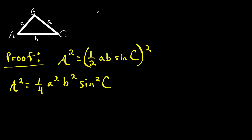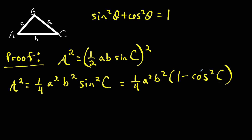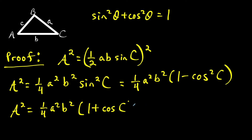From this step, I want to use the Pythagorean identity: sine squared theta plus cosine squared theta equals one. So if I want an expression just for sine squared, sine squared equals one minus cosine squared. That gives us one fourth times A squared times B squared times (one minus cosine squared C). And now we're going to factor this because it's a difference of two squares, giving us one fourth times A squared times B squared times (one plus cosine C) times (one minus cosine C).